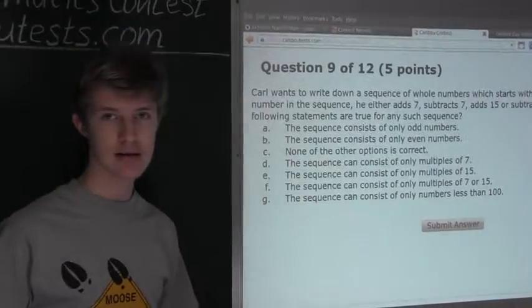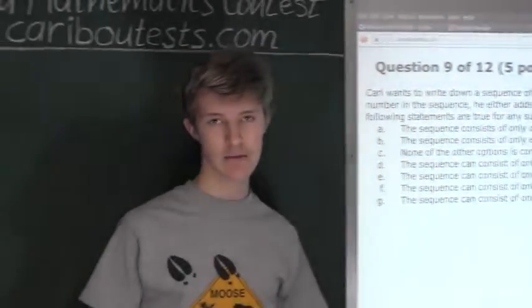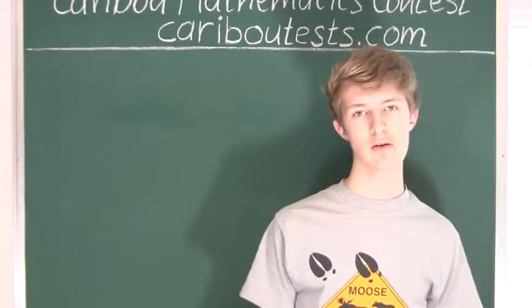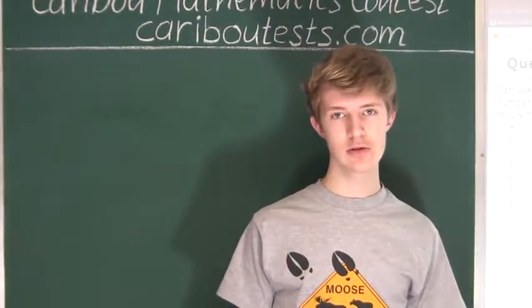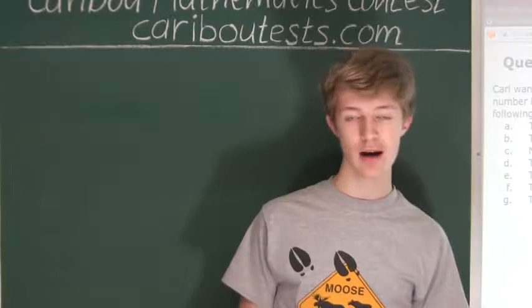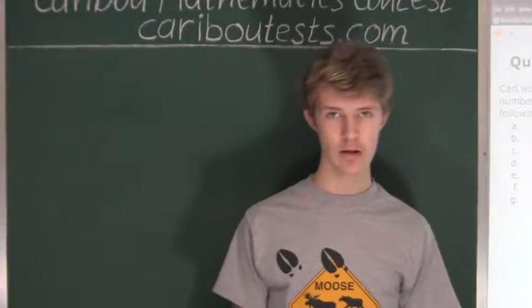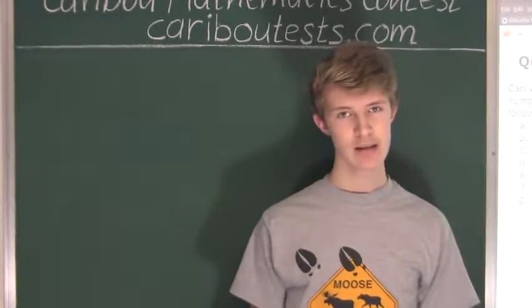Now an even number is any number that can be divided by 2 and also ends in 0, 2, 4, 6, and 8. And an odd number is a number that ends in 1, 3, 5, 7, and 9.